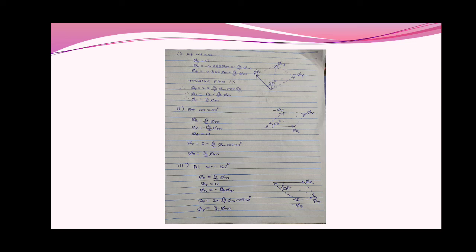Third condition at ωt = 120 degrees: putting this value into φr, φy, and φb equations gives φr = √3/2 φm, φy = 0, and φb = −√3/2 φm. The phasor diagram is shown — φr is positive so drawn as is; φy is 0 so not shown; φb is negative so the original φb is drawn in the opposite direction as a dotted line. The resultant of φr and φb is: φresultant = 2 × (√3/2 φm) × cos(30°) = 3/2 φm.